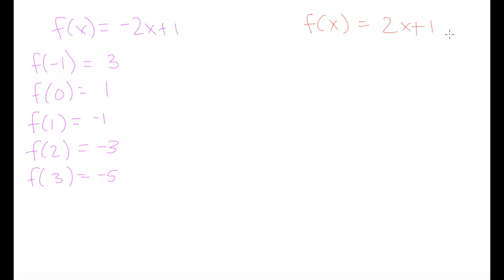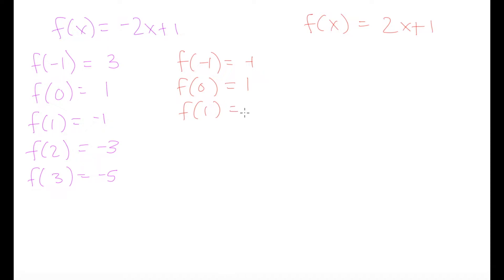Now let's do the same thing for our second function. When x is equal to negative 1, our y value is going to be negative 1. When x is equal to 0, we're going to have a y value of 1. When x is equal to 1, we're going to have a y value of 3, and when x is equal to 2, a y value of 5.